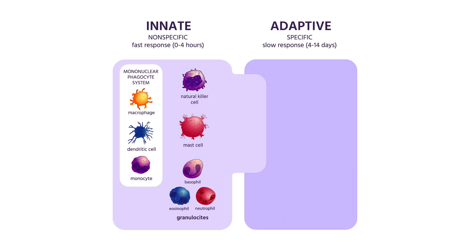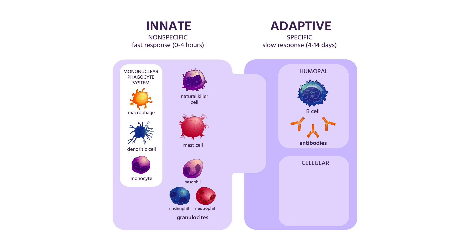The adaptive immune system consists of highly specialized systemic cells and processes that are separated into two main components: the humoral and cellular. The humoral immunity is mediated by activated B cells that produce and secrete antibodies against a specific antigen. On the other hand, the cellular immunity is mediated by T lymphocytes, also called T cells.